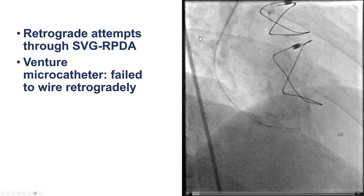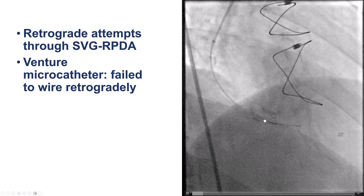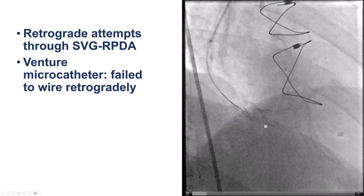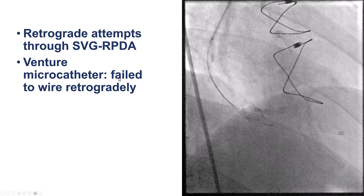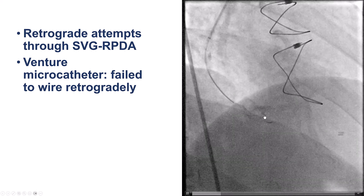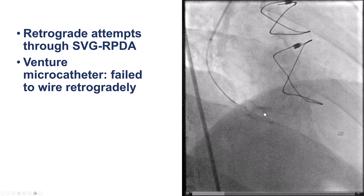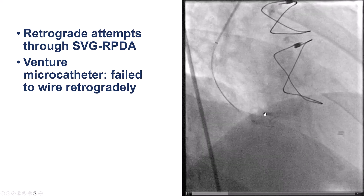We first went down the saphenous vein graft, but despite using an angulated Venture microcatheter, we were unable to wire retrogradely.